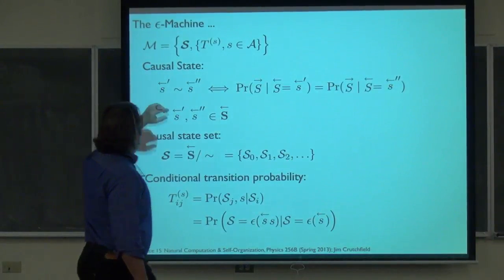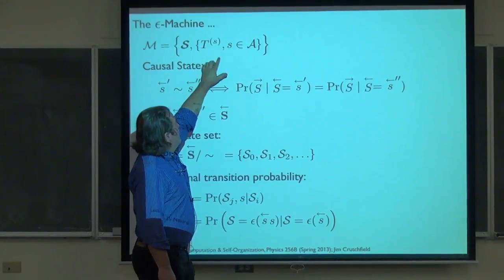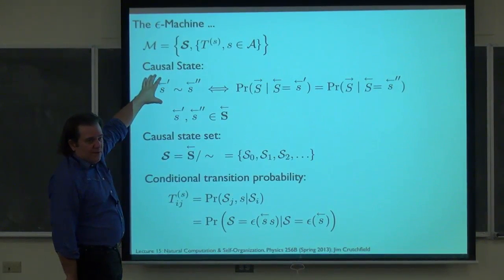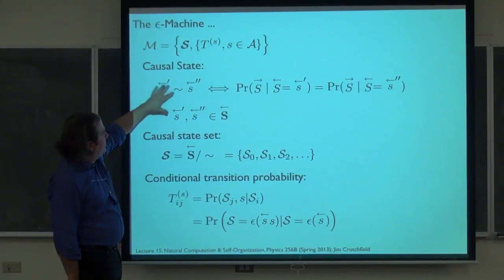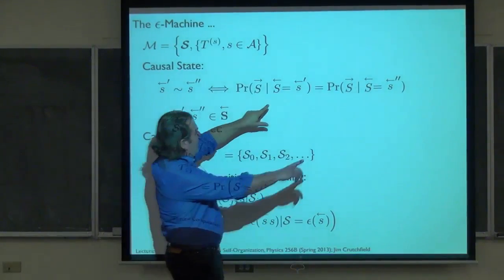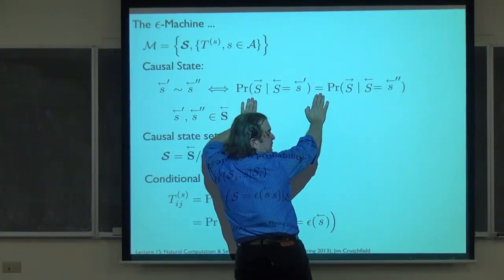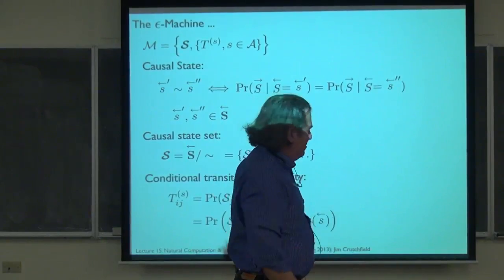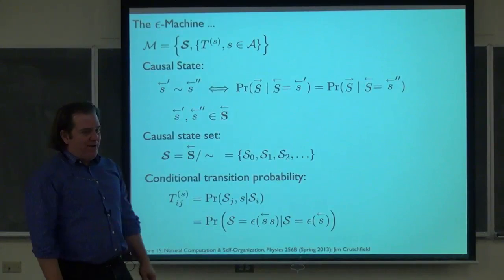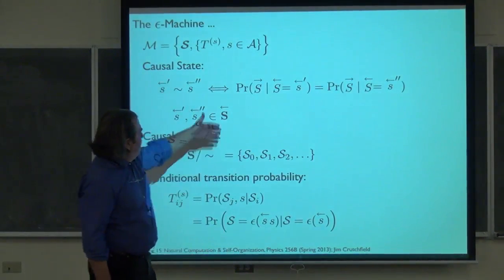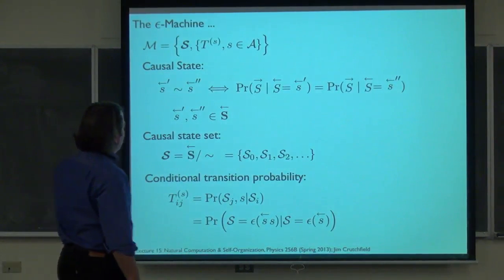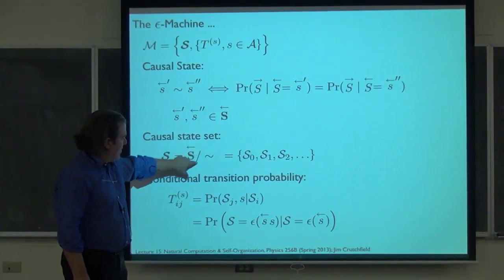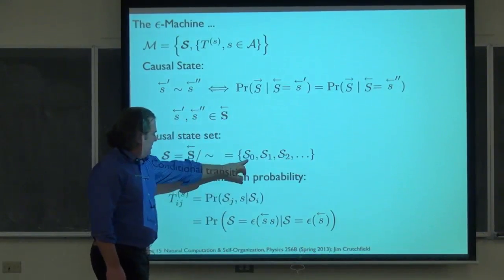To recall: the epsilon machine is this set of causal states and symbol-labeled transition matrices. The first real lecture was trying to motivate this equivalence relation — the predictive equivalence relation that induces the causal states. We group histories together when, conditioned on those particular histories, the view of the future is the same. In other words, don't make distinctions between particular pasts if they lead to the same future distribution. You can either think of this as incredibly obvious or profound. Certainly in terms of the consequences, it's a surprisingly powerful idea.